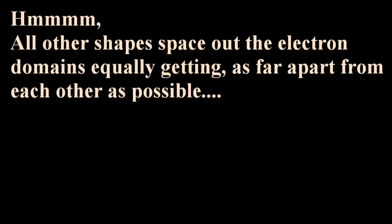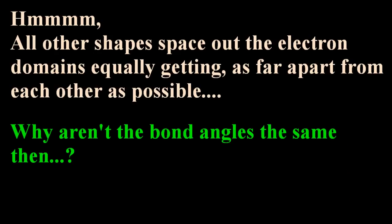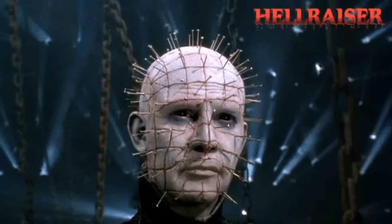But hold on, those angles 120 and 90 degrees, all other shapes space out the electron domains equally, getting as far apart from each other as possible. So why aren't the bond angles the same then? There must be a way to space them out. I mean, look at this guy's head. The nails are not evenly spaced out here.